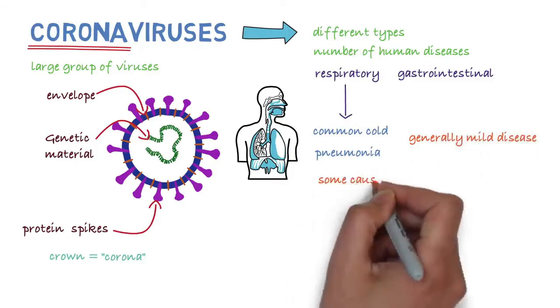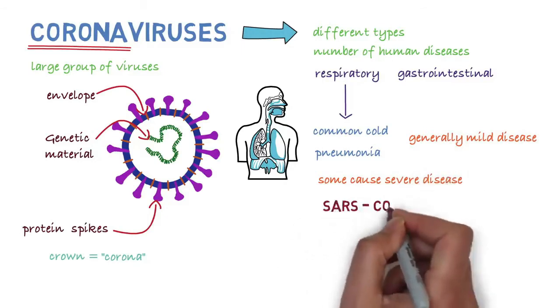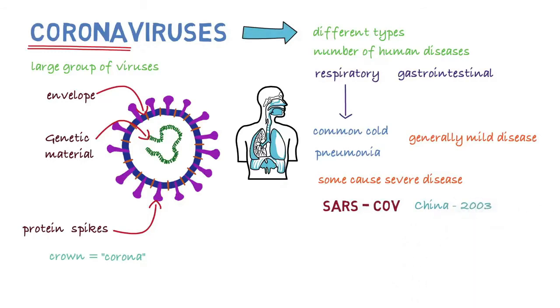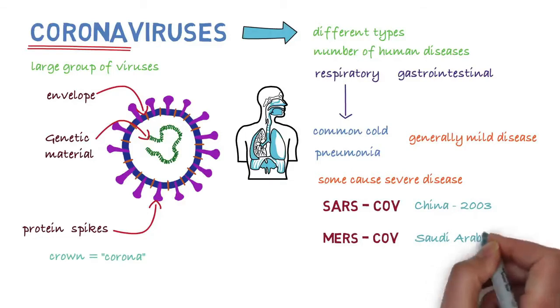However, there are some types of coronaviruses that can cause severe disease. These include the severe acute respiratory syndrome coronavirus in China in 2003 and the Middle East respiratory syndrome coronavirus that was first identified in Saudi Arabia in 2012.